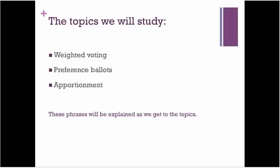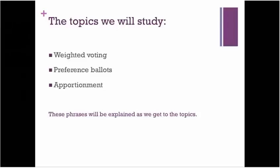So here are the three topics that we're going to study, and we'll study them in this order. They will be explained as we get to the topics. The first is something called Weighted Voting. The second one also has to do with voting — that topic is called Preference Ballots. And then finally, moving away from voting, we'll get to a topic which is called Apportionment.